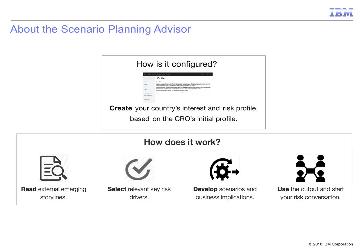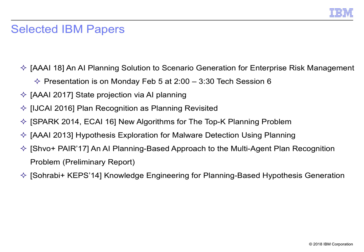The next two videos respectively cover SPA's two main capabilities: storyline aggregation, which provides continuous awareness, and scenario generation. For more information about SPA, please refer to our papers.